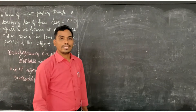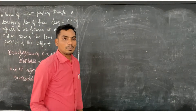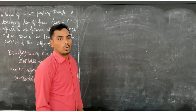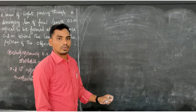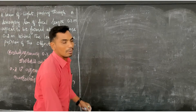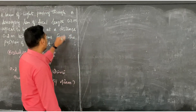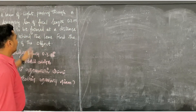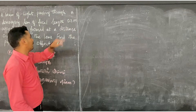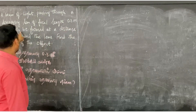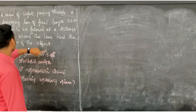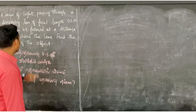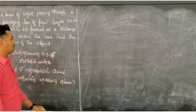Hi students. I am going to take a look at the optics lesson and this problem: the beam of light is passing by a diverging lens of focal length 0.3 meter. It appears to be focused at a distance of 0.2 meter behind the lens. Find the position of the object.